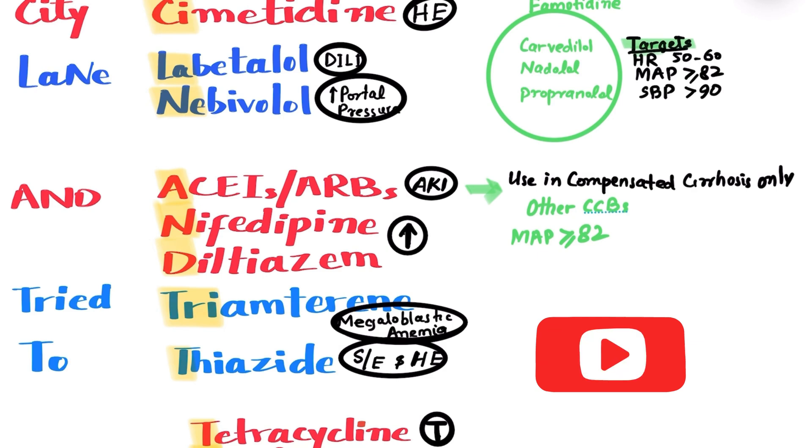Tried stands for triamterene, a potassium-sparing diuretic. It should be avoided, as it can lead to megaloblastic anemia. And To stands for thiazide diuretics. These should be absolutely avoided in cirrhotic patients, as they are not strong diuretics, but can lead to side effects like low sodium level, hyponatremia, and hypokalemia. Both of them can lead to hepatic encephalopathy.